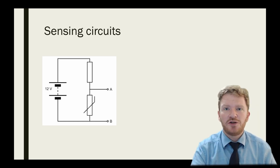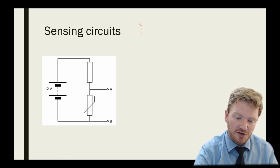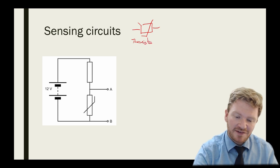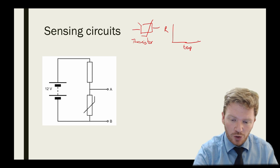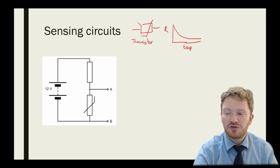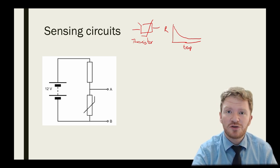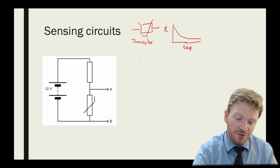Now we're going to think about how we can use potential dividers in sensing circuits. There are two components that we need to think about here. This component is called a thermistor, and you'll experiment with them in class. But the basic idea of a thermistor is that its resistance changes with temperature. When it's very cold, it has a high resistance. And as its temperature increases, its resistance drops. This is quite unusual. Most devices, as they get hotter, their resistance goes up. But a thermistor does the opposite.